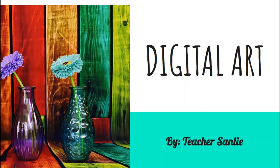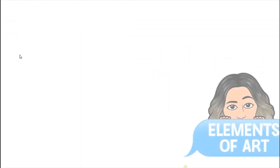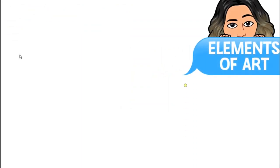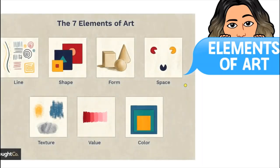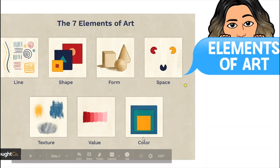Hello everyone, welcome to our second video. It's all about digital art. When we say art, we have the elements of art. We have actually seven elements of art, namely: the line, the shape, the form, space, color,